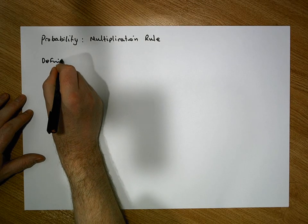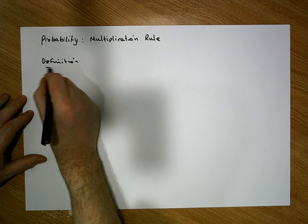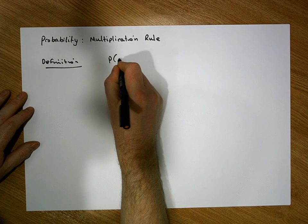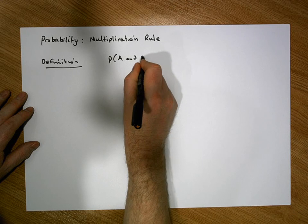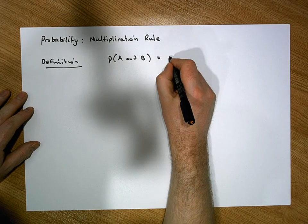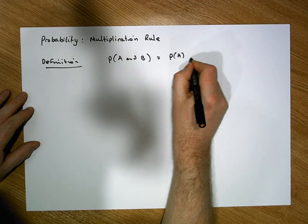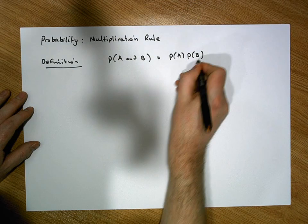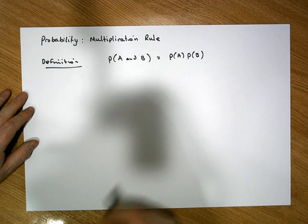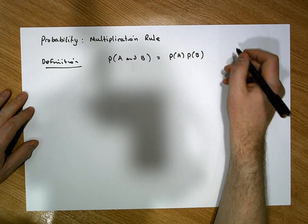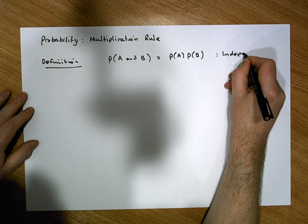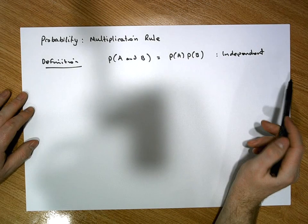Let's provide a definition of the multiplication rule. It states that the probability of A and B happening is simply equal to the product of the individual probabilities — the probability of A times the probability of B. But this is only the case when both A and B are events that are independent of each other. This is the independent case.